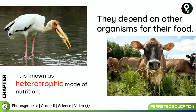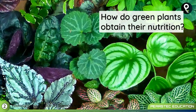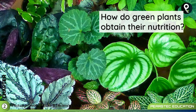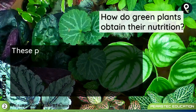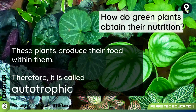Heterotrophic mode of nutrition — organisms which depend on another organism for their food are called heterotrophs. Now, how do green plants obtain their nutrition? These plants produce their food within themselves, and therefore it is called the autotrophic mode of nutrition. So heterotrophic and autotrophic — you clearly know the difference, even from the beginning.